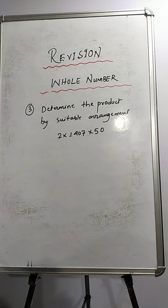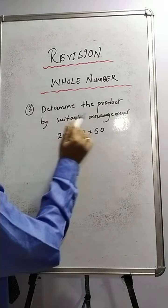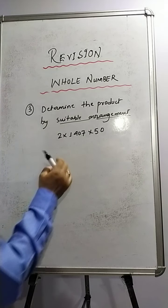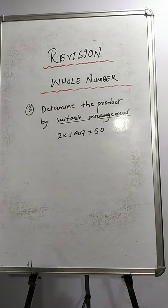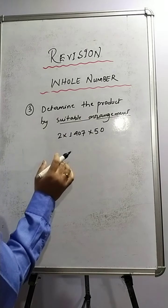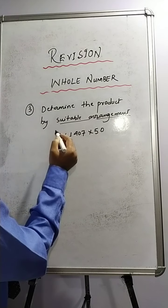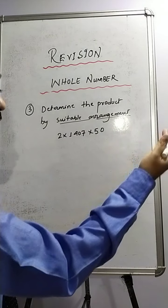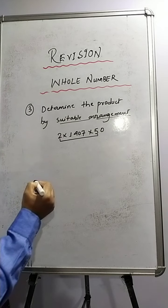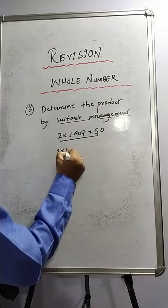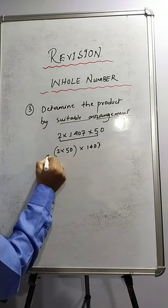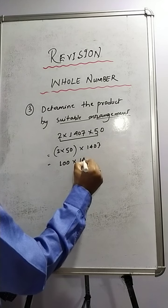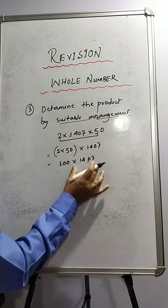Now let's move on to sum number 3: determine the product by suitable arrangement. This is a very important word — suitable arrangement. It means you have to find such numbers whose product would be 10, 100, or 1000. Here, you can see that 2 and 50 — if you multiply these two numbers you will get 100. So bring 2 and 50 together, and multiply 2 × 50 to get 100, then multiply 100 by 1407. It becomes very easy.